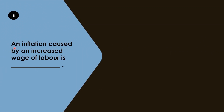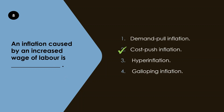Question 8: An inflation caused by an increased wage of labor is — you can answer this even without the options. The answer is cost push inflation. Cost push inflation occurs when the cost of production rises, leading to an increase in the overall price level. Higher wages are a major cause, as labor costs are significant. Firms pass on higher costs to consumers by raising prices. Demand pull inflation is when demand exceeds supply; hyperinflation is out-of-control inflation; galloping inflation is very high inflation above 10% but not uncontrollable. The correct answer is cost push inflation.